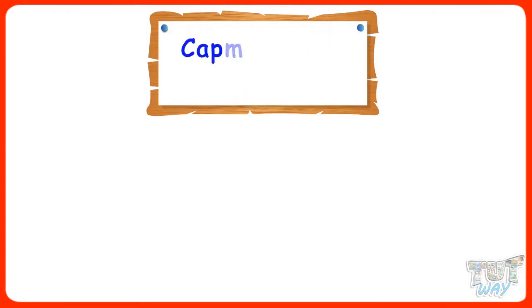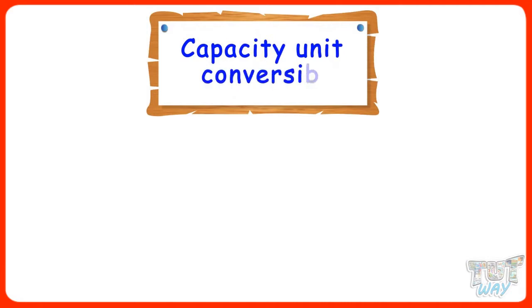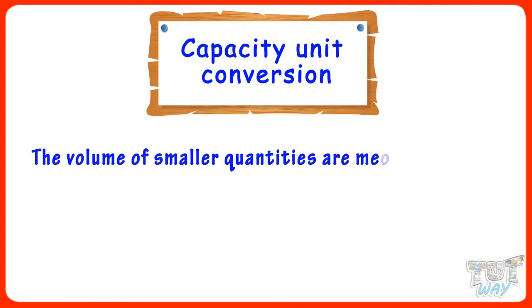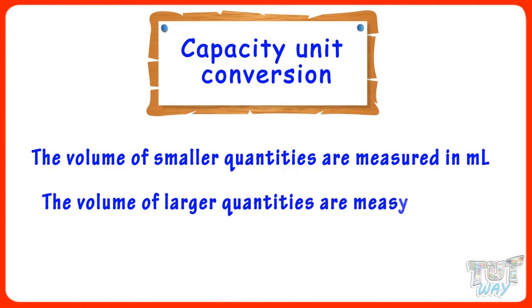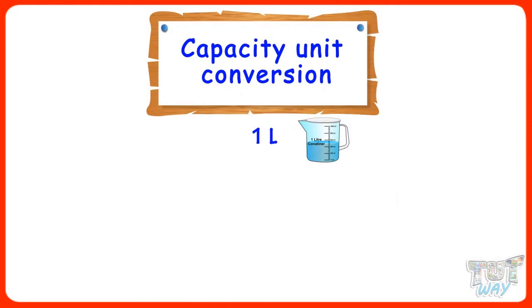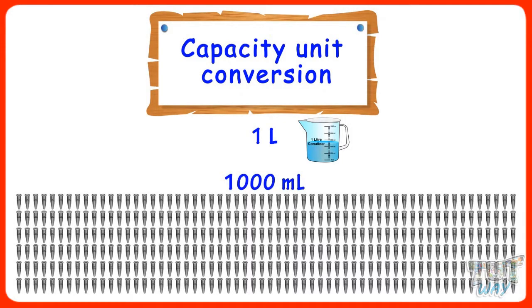The volume or quantity of a liquid is measured in liters and milliliters. Smaller quantities are measured in milliliters, and larger quantities are measured in liters. 1 liter equals 1000 milliliters.